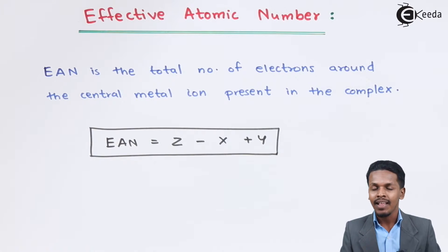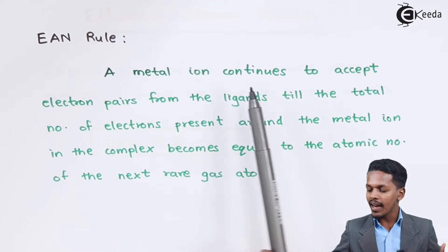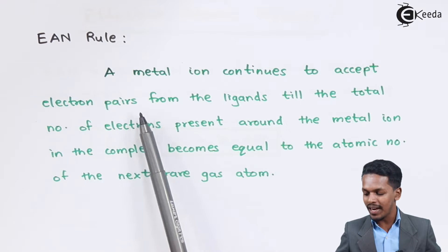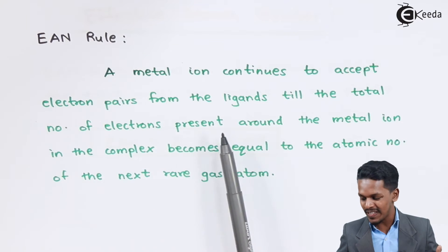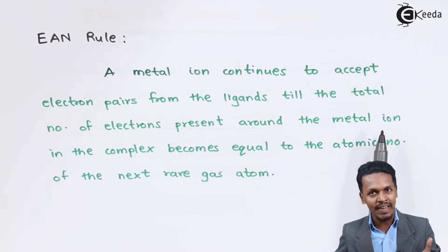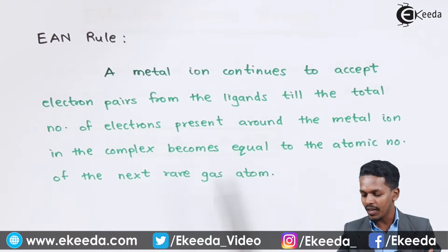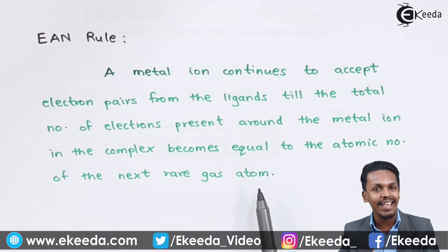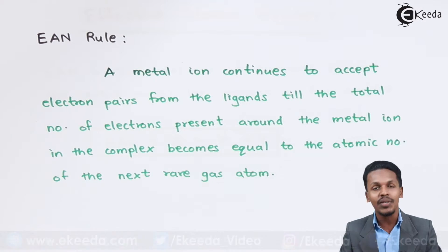There are also certain rules of EAN. The rule states that a metal ion continues to accept electron pairs from the ligands until the total number of electrons present around the metal ion in the complex becomes equal to the atomic number of the next rare gas atom. Let me explain this with the help of an example.